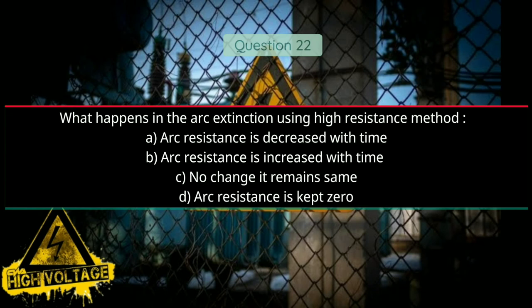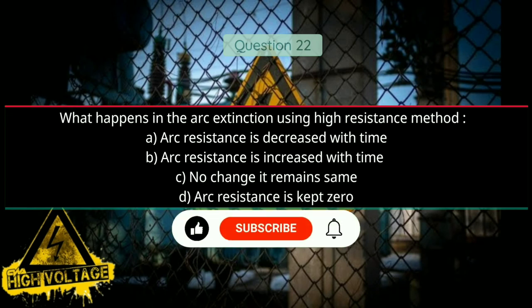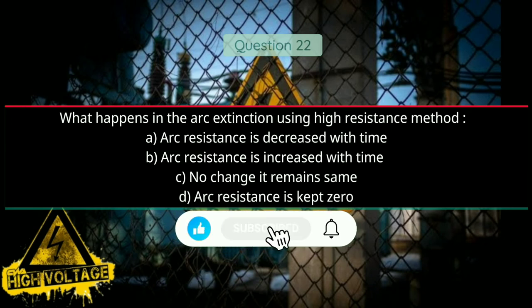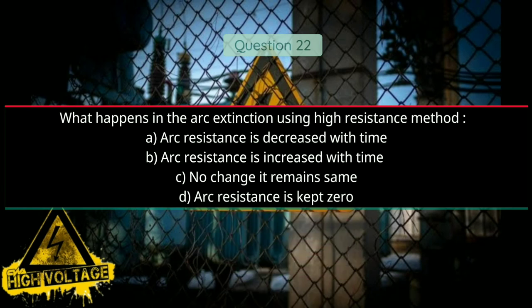Question number twenty-two: What happens in the arc extension using high resistance method? Option A: arc resistance is decreased with time, Option B: arc resistance is increased with time, Option C: no change, it remains the same, and Option D: arc resistance is kept zero. Answer will be B, arc resistance is increased with time.